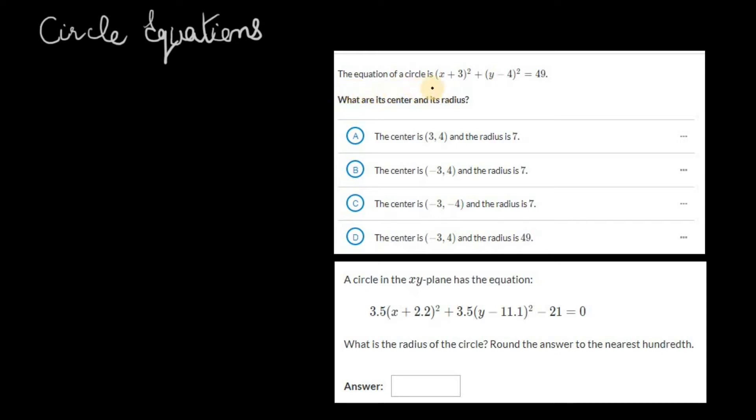The equation of a circle is (x + 3)² + (y - 4)² = 49. What are its center and its radius?